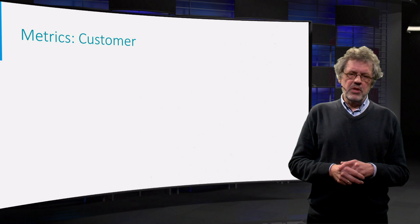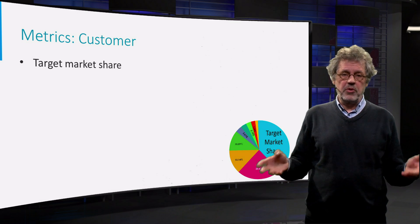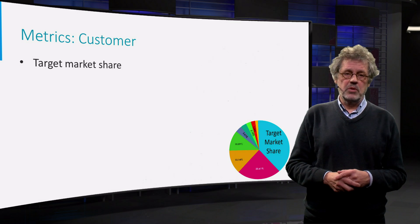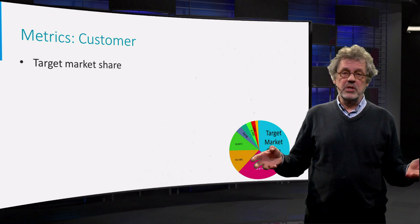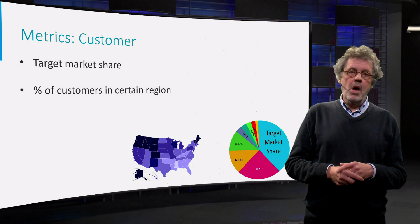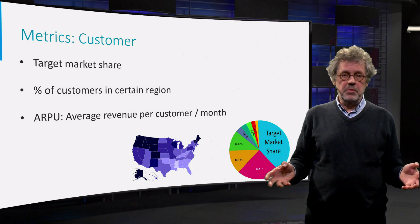The first group of metrics is related to your target group. What percentage of the potential group of customers do you want to reach? Or what percentage of customers would you want to reach in a certain region? Others are for instance RPU, average revenue per customer per month.